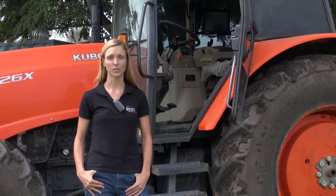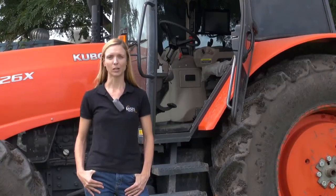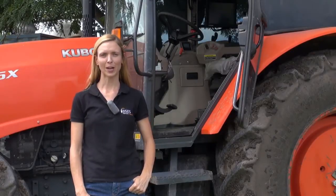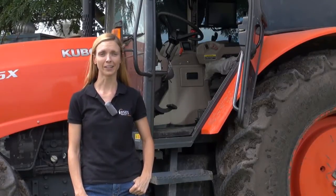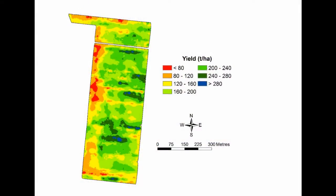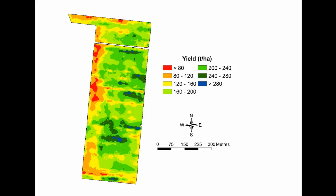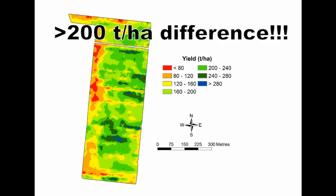There are a variety of tools and technologies out there to help you do that, depending on what you're trying to accomplish. You might be surprised at the amount of variability that can be found in one paddock. Let's take a look at a yield map from a 27-hectare paddock in the Burdekin. This paddock contains a few different varieties, but otherwise it's managed uniformly. The average yield in this block is 176.5 tons per hectare, but the map shows yields ranging from less than 80 tons per hectare in red to more than 280 tons per hectare in blue. That's a big range — more than 200 tons per hectare!